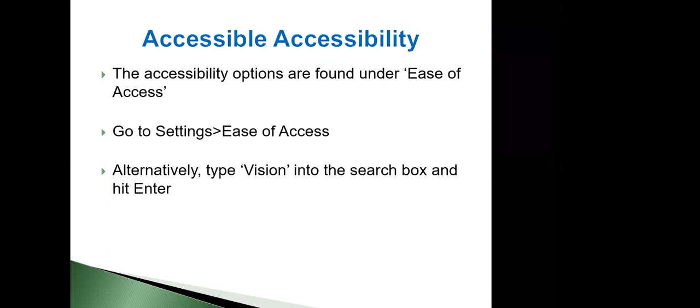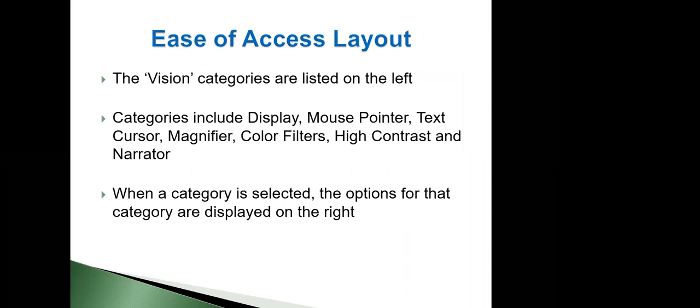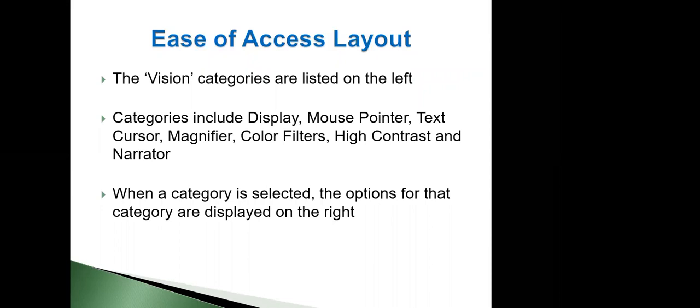How do we go about accessing the accessibility features? There's a few ways, but we will find those features under Ease of Access in our settings. The way that I prefer to get to them is just hit the Windows key to bring up the search box and type in 'vision' and then press Enter. That's going to take us right through to the vision accessibility options. When we get through to that screen, we'll see that the categories for vision are listed on the left — display, mouse pointer, text cursor, magnifier, color filters, high contrast, and narrator.